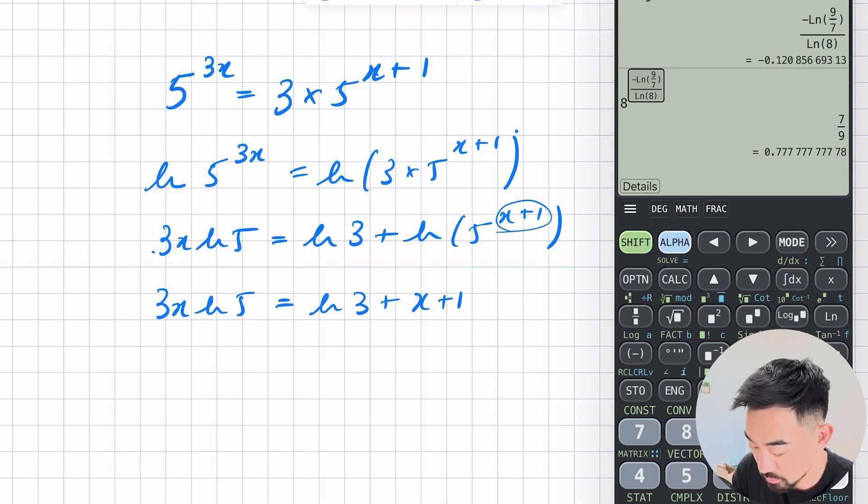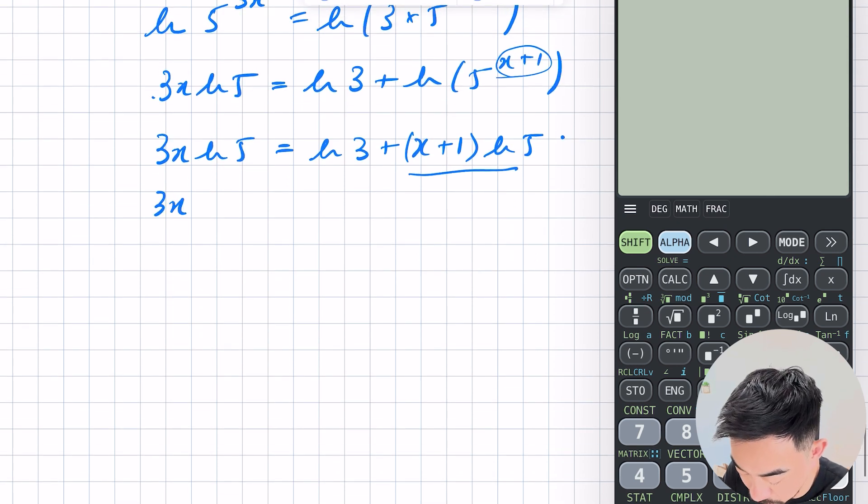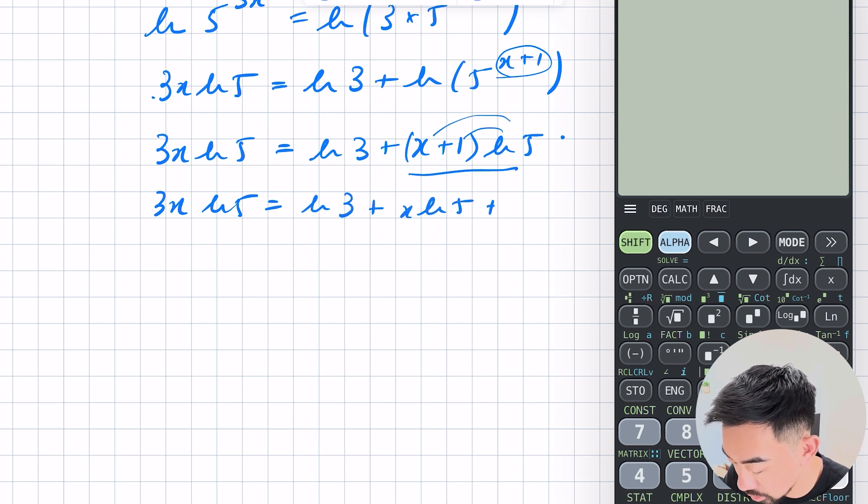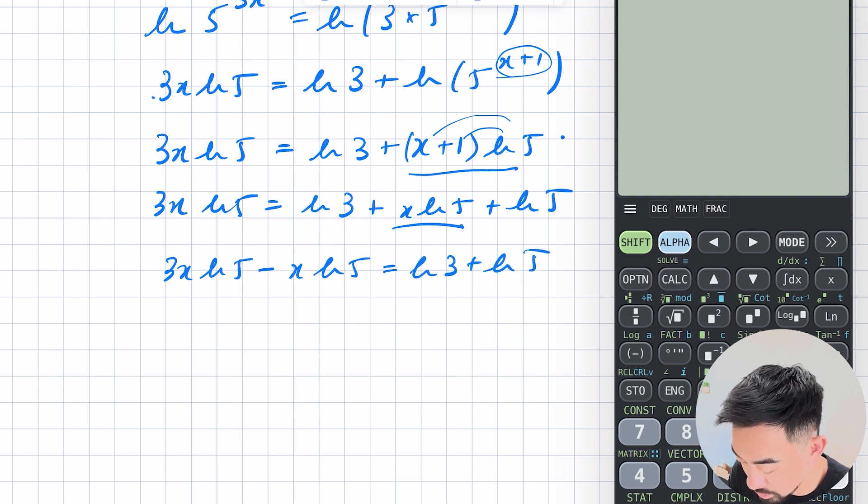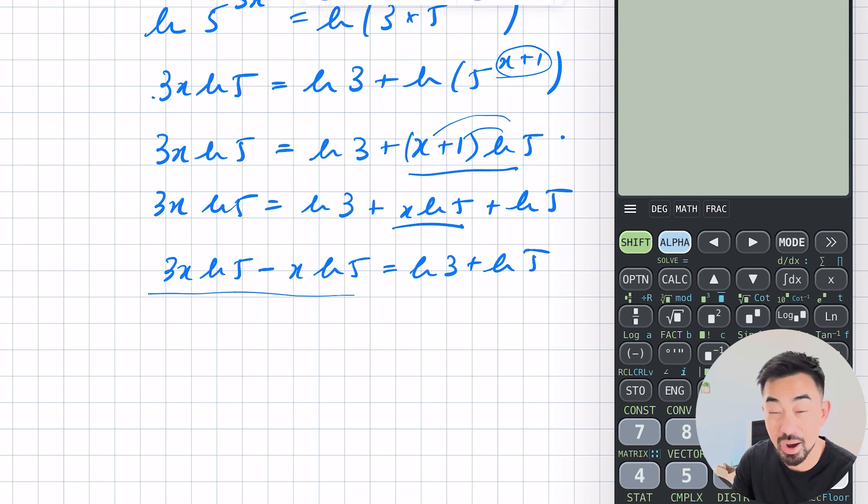So let's just clean this up a bit. Now ln 3 plus remember this x plus 1 can come to the front. So x plus 1 ln 5. Okay now let's expand this out. So you've got 3x ln 5 is equal to ln 3 plus expanding this out will be x ln 5 plus ln 5. Now let's move this x to the other side. So 3x ln 5 minus x ln 5 is equal to ln 3 plus ln 5.